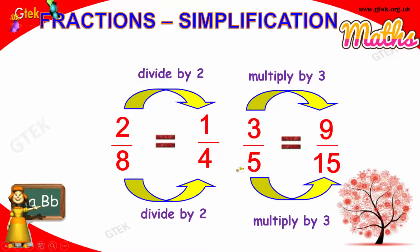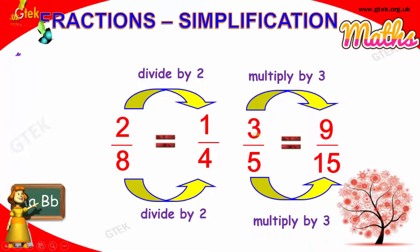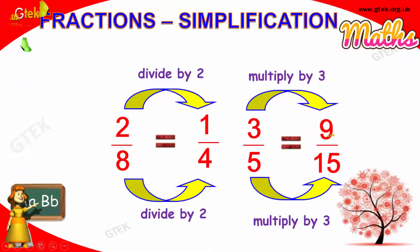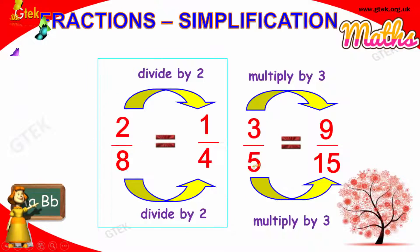Three divided by five — here you can't simplify further, as three and five share no common factor. Three by five is equivalent to six by ten (multiplying numerator and denominator by two), or nine by fifteen (multiplying by three). But this is not simplification — it's the reverse process. Simplification goes from a larger fraction to a simpler one; multiplying is the reverse.